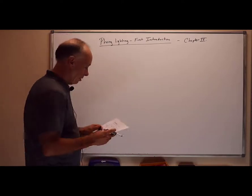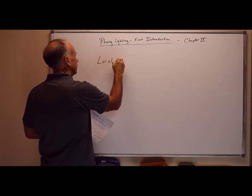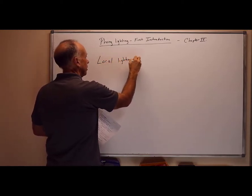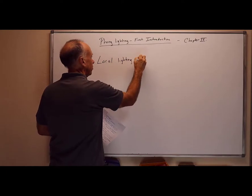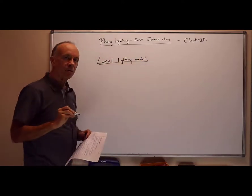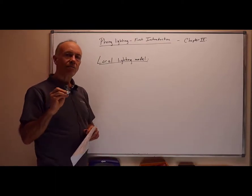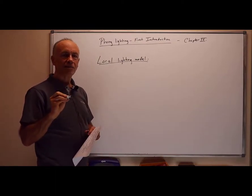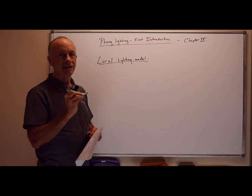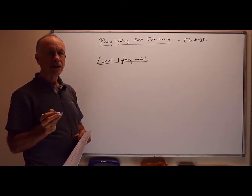Phong lighting will let us use subtle shading of colors to recreate a three-dimensional appearance of objects. This is a kind of local lighting model. What local means is that we don't take into account global light effects. We look at one point on a surface and one light source, and we look at how does that light source light up that point on the surface.